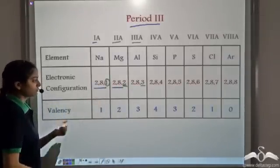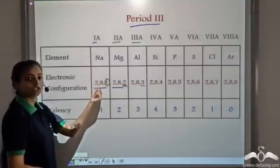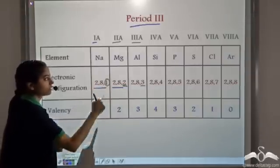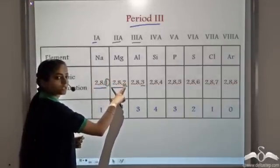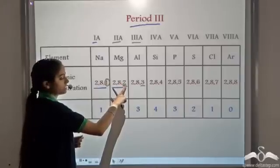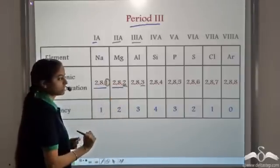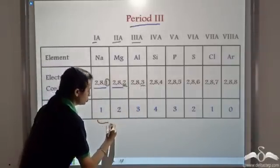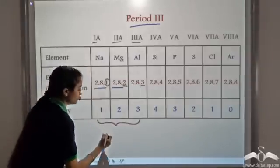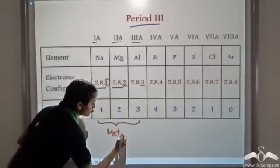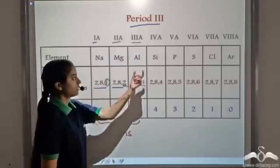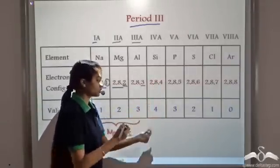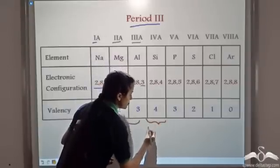Sodium has electronic configuration 2-8-1. It can easily lose this one electron to complete its octet, so its valence is 1. Magnesium has 2 electrons in the valence shell and can lose them to complete its octet — valence is 2. Aluminium loses 3 electrons, so its valence is 3. Elements that lose electrons to complete their octet are known as metals. Silicon has 4 electrons in the valence shell — it neither gains nor loses electrons but shares 4 electrons. This is known as metalloids.